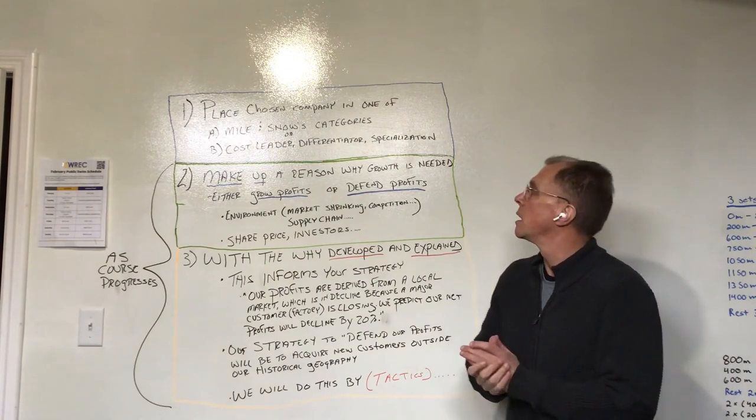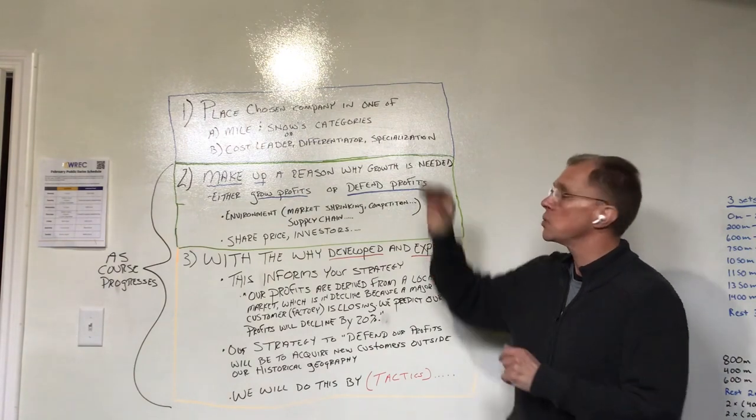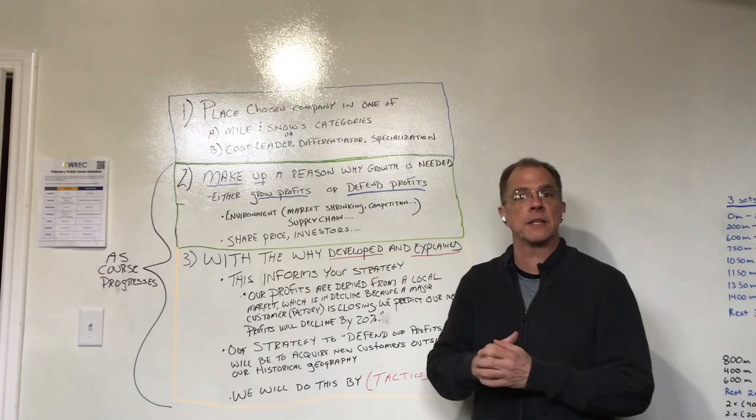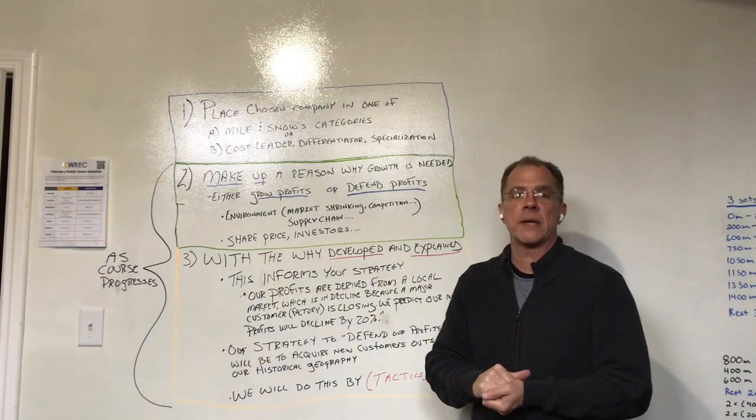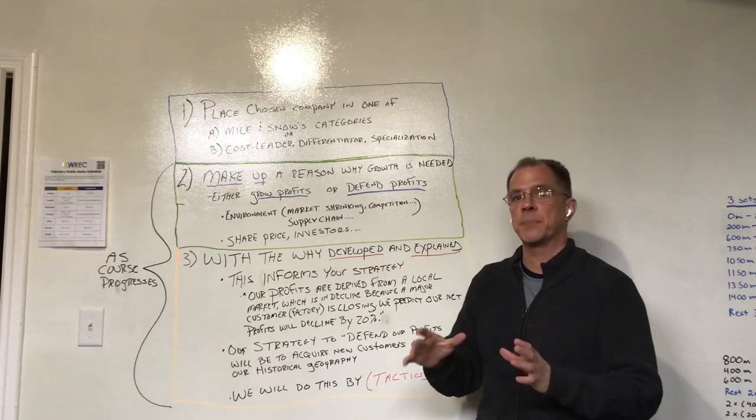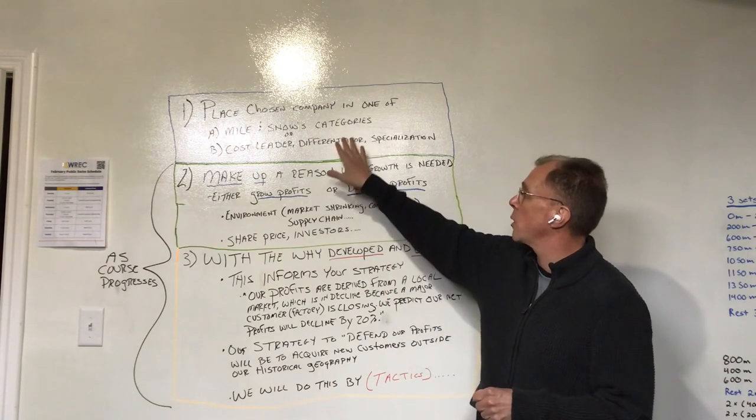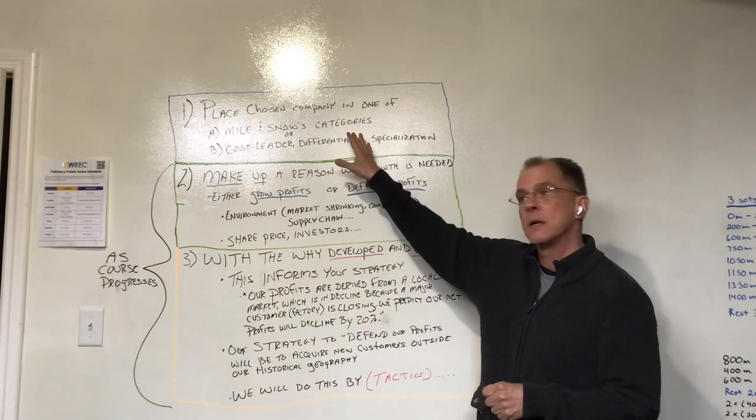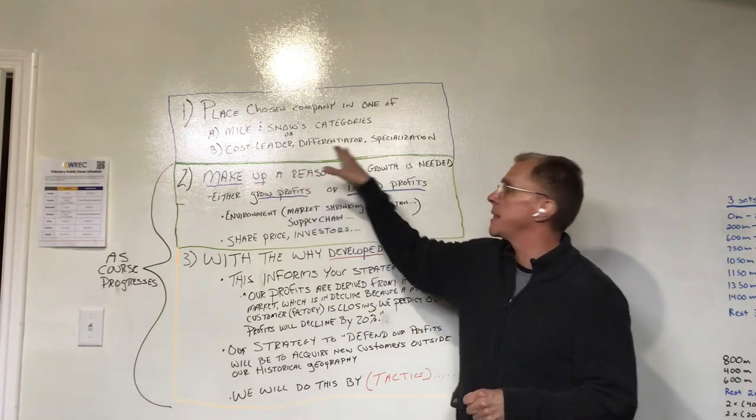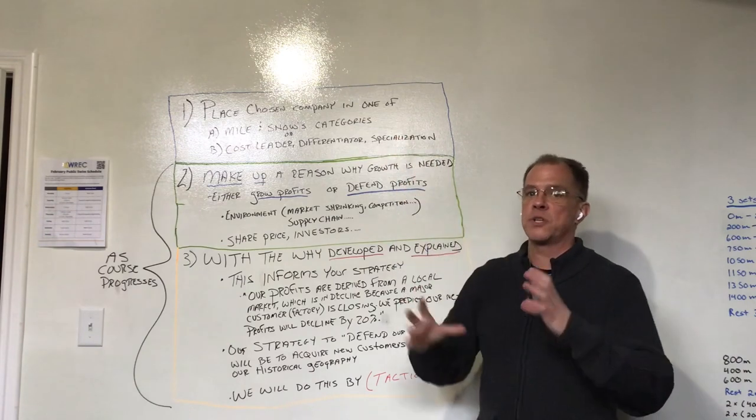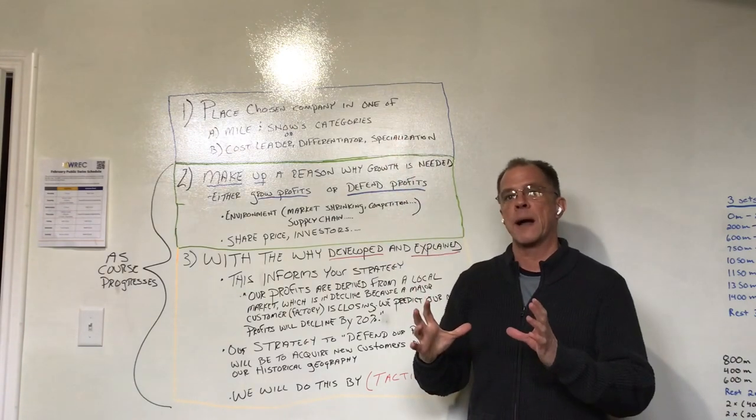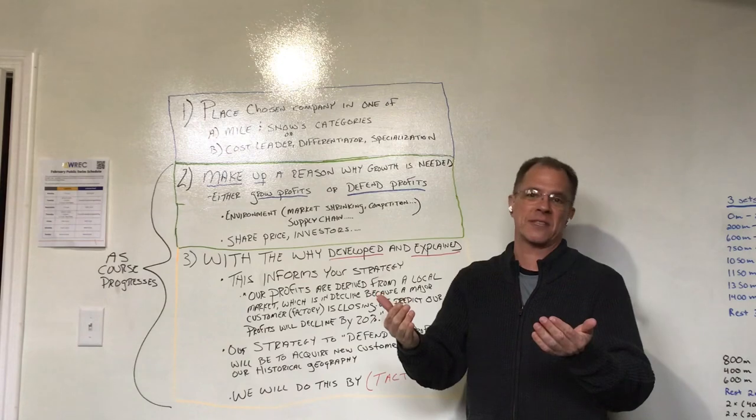So again, this is the first day of module one. This week you're just gonna choose the company that is on the list that's provided, and as I had in my announcement, I want you to place this company in one of these categories: either cost leader, differentiator, or specialization.